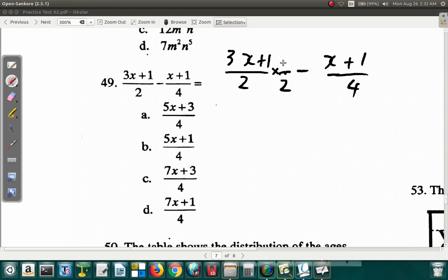So I want the 2 to become 4. I must multiply by 2 under here. But to compensate, I multiply up here by 2 as well. After all, 2 over 2 is 1. So the value of the number doesn't change. So 2 times 3 is 6x plus 2 times 1 is 2. 6x plus 2 over 2 times 2 is 4. Minus x plus 1 over 4. So what I have up top is all of this over 4.